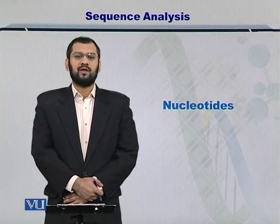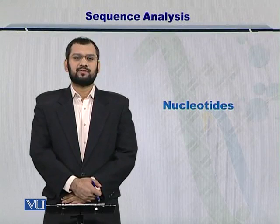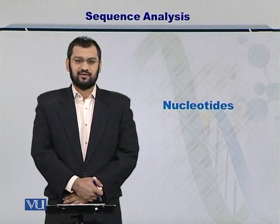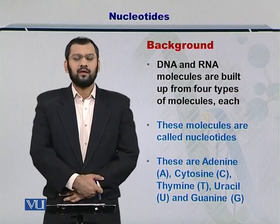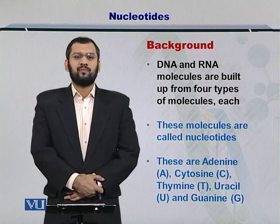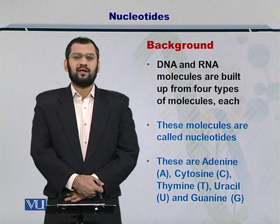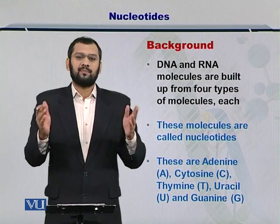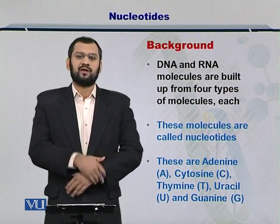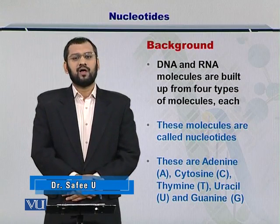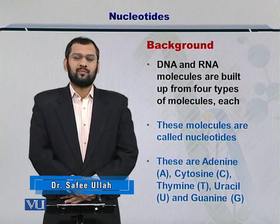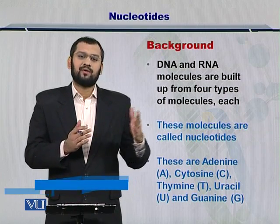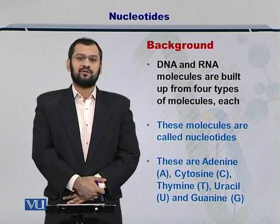Dear students, in this module, we're going to discuss the various types of nucleotides that are there in the DNA and the RNAs. As you would know by now, the DNA is comprising of four different nucleotides. There are multiple copies of these nucleotides within a single DNA molecule. In case of the RNA, it is also comprised of four different nucleotides and an RNA molecule can have multiple copies of these nucleotides as well.